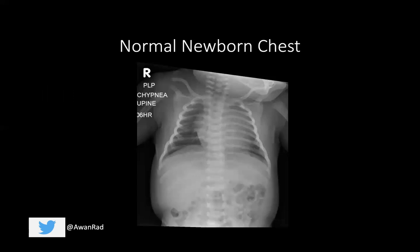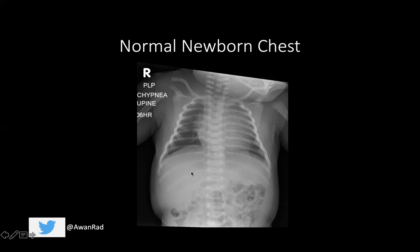Let's start with a normal newborn chest x-ray. Notice there's nice aeration of the lungs and good volumes. Typically you can count nine to eleven ribs — here we have about eight to nine ribs on the left, which is normal. This is a normal cardiothymic silhouette; it can appear prominent because of the thymus, so this is not cardiomegaly. Importantly, there are no pleural effusions, no pneumothorax, no focal opacity to suggest pneumonia, just normal vascularity branching into the lung parenchyma. No pneumoperitoneum, no rib fractures, and normal vertebral bodies.